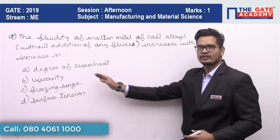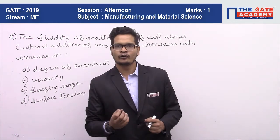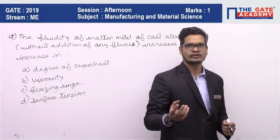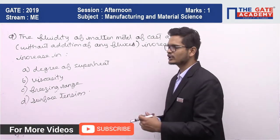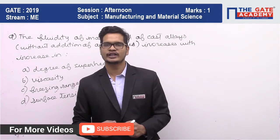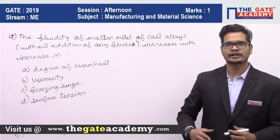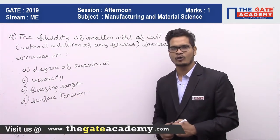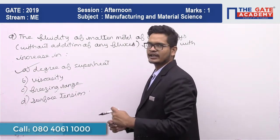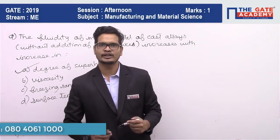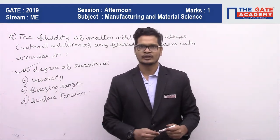Due to lack of fluidity we see lots of casting defects, and the remedy is always to increase the degree of superheat. With the increase of degree of superheat we can increase the fluidity — the molten metal can flow further into the corners. So always, to increase the fluidity, we increase the degree of superheat, meaning we heat the molten metal to higher temperatures. So the answer is degree of superheat.